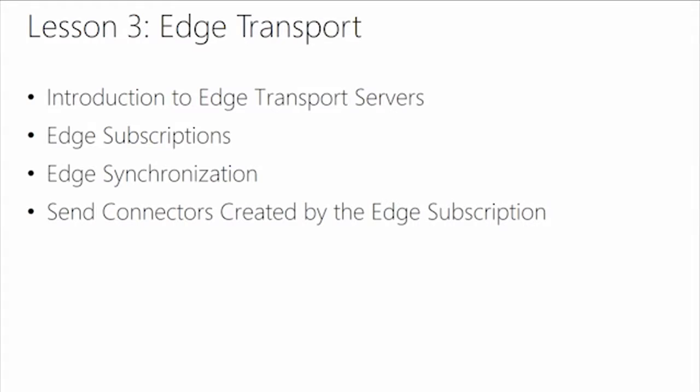Another important concept for message security is to deploy a solution in your network that first scans email for malware and spam before it sends it into the internal network. Microsoft's offering for that is the edge transport server. The edge transport server allows you to deploy an Exchange server that is aware of your Exchange system in a perimeter network — it receives emails, queues them, cleans them, and then sends them to the internal network so that only real, clean messages get through.